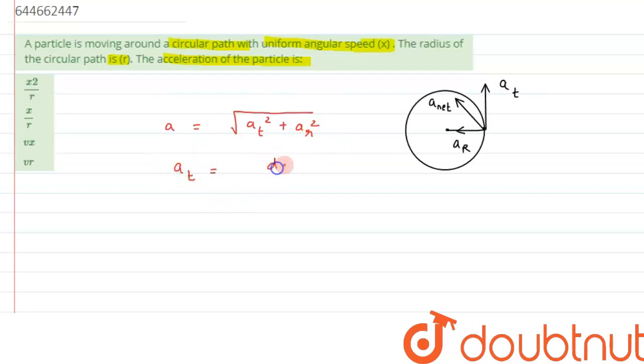Because we know in the case of uniform circular motion, the magnitude of linear velocity acting along the tangent is always constant, so this value will come out to be zero. Since we have been given uniform angular speed, the angular speed is uniform.